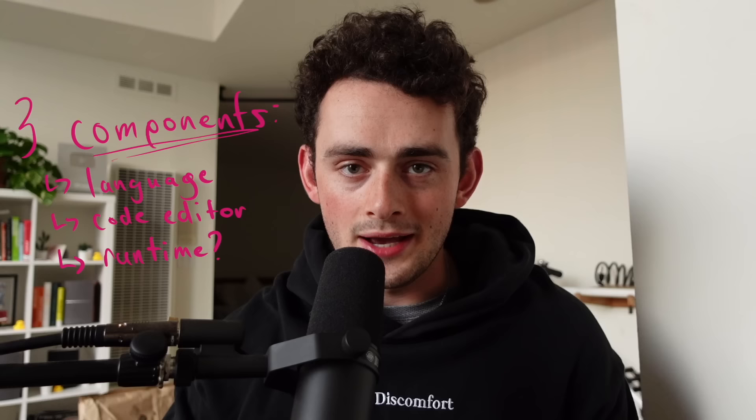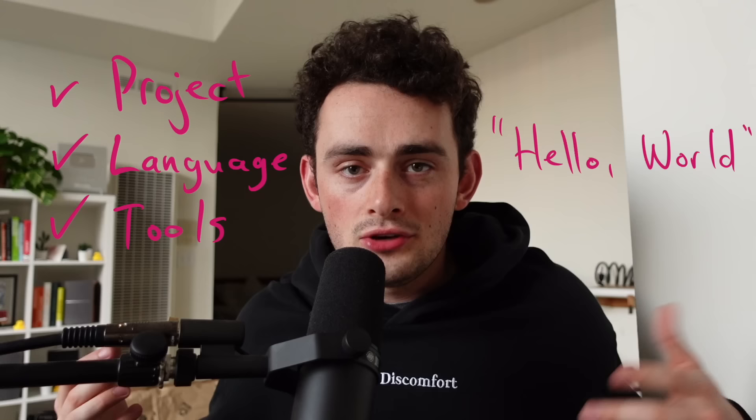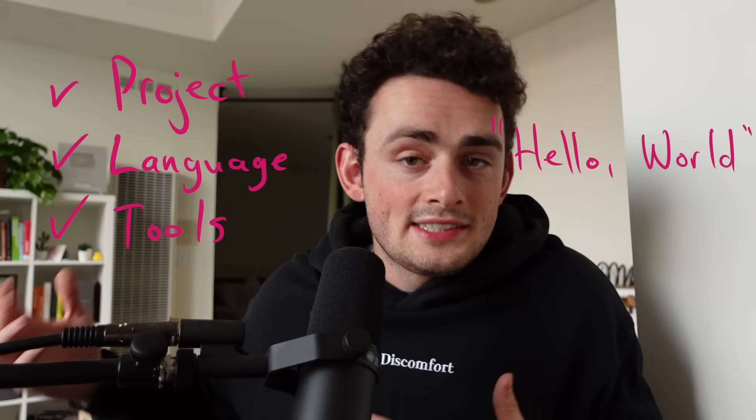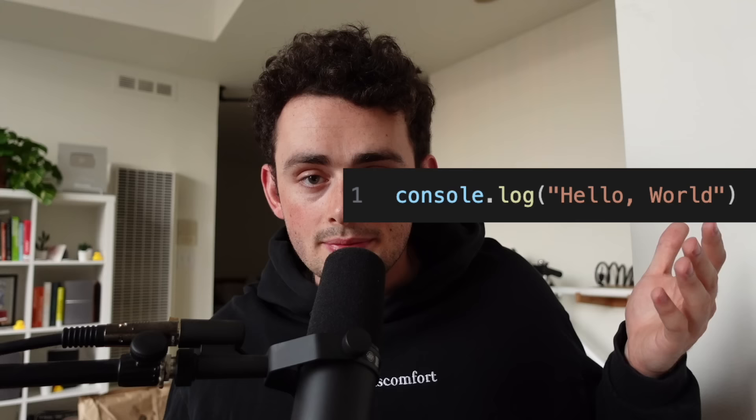At this point, we have our project, our language, and our tools installed — we just need to make sure they're working properly. This is called Hello World: the very first program you run. The goal is literally just to print 'Hello World' on the screen — usually one line. This is what it looks like in Python, and this is what it looks like in JavaScript. Once it executes, you know your tools are working and it's time to start the actual project.